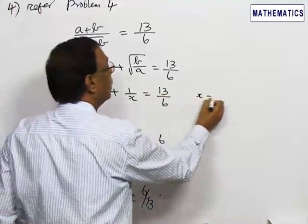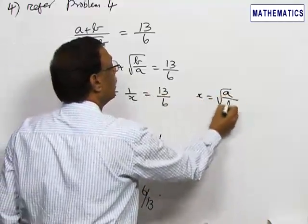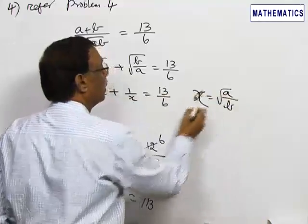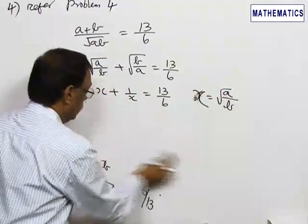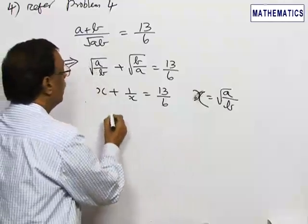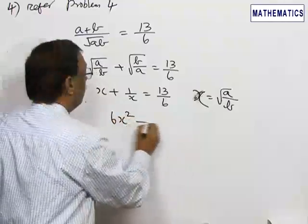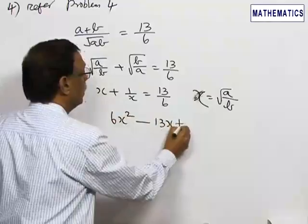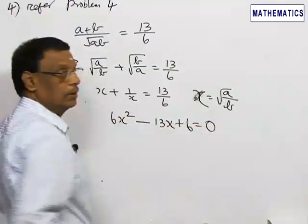Assuming X equal to root of A by B. This gives us the quadratic equation 6X square minus 13X plus 6 equal to 0.